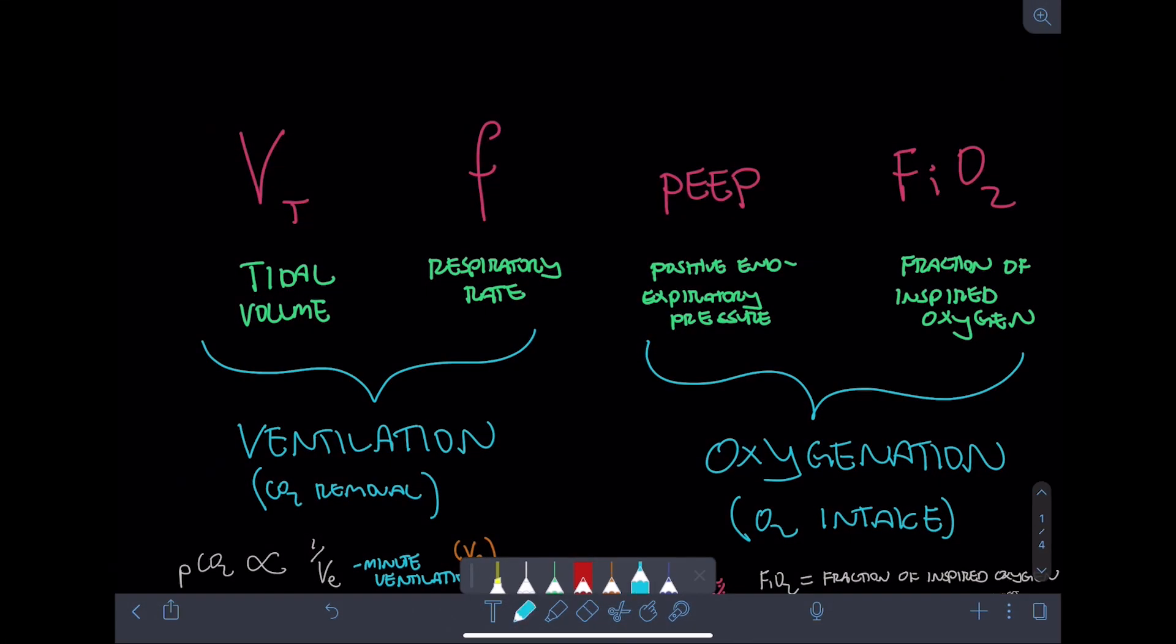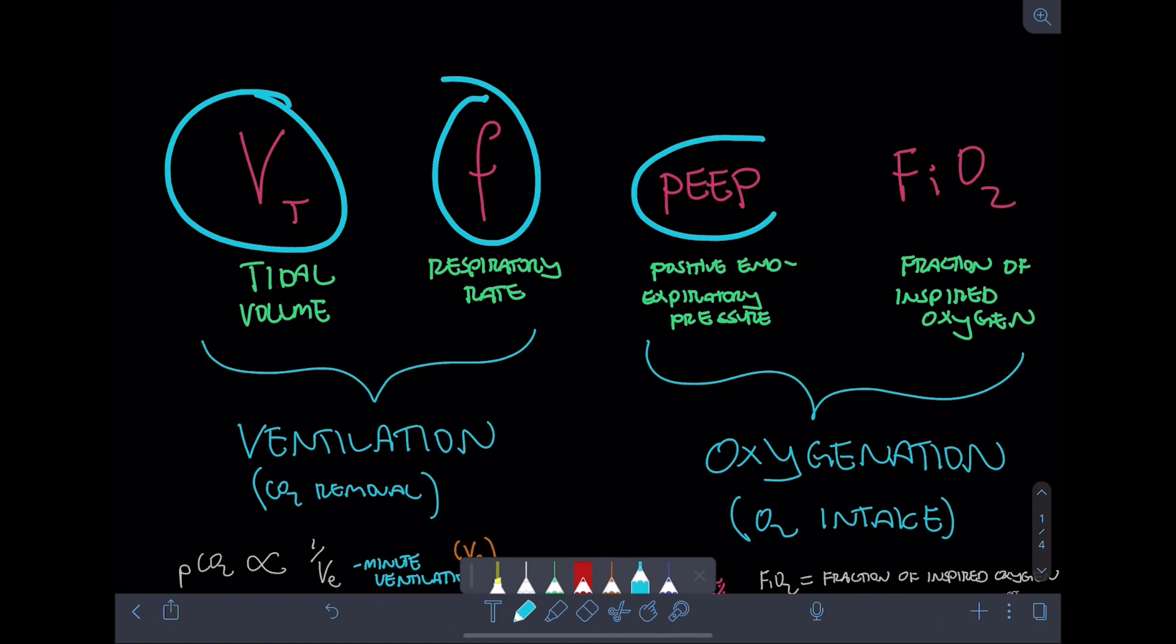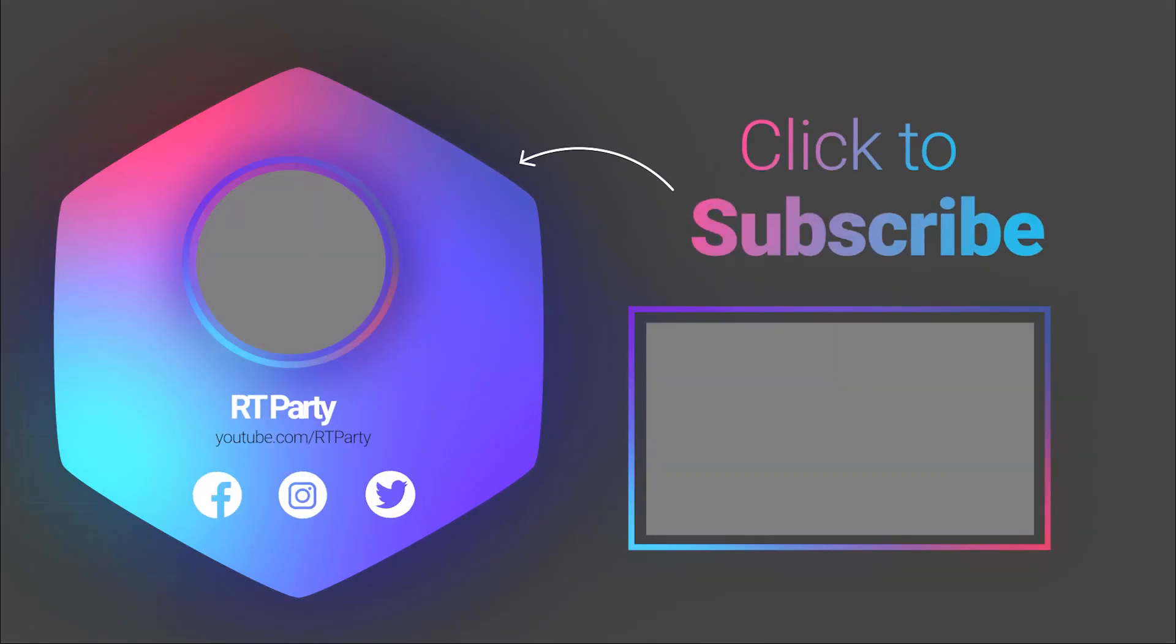So there you have it. You have four basic vent settings, the ones that you'll be giving and receiving and reporting most of the time. Your tidal volume and your respiratory rate together make up your minute ventilation and address CO2 and acid-base imbalance. And your PEEP and FiO2 together make up oxygenation and address problems with saturation and hypoxemia. So thank you very much for watching. Please like, subscribe, and comment with any future topics that you'd like to see.